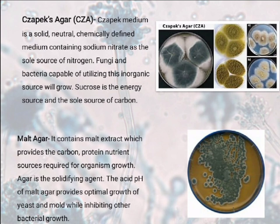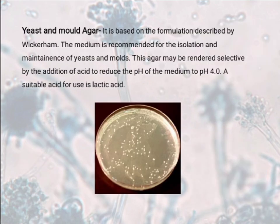The other medium is Malt Agar. It contains malt extract which provides the carbon, protein, and nutrient sources required for organism growth. Agar is a solidifying agent. The acid pH of malt agar provides optimal growth of yeast and mold while inhibiting other bacterial growth. The last agar we discuss today is Yeast and Mold Agar. It is based on the formulation described by Wickerham. The medium is recommended for the isolation and maintenance of yeast and molds. This agar may be rendered selective by the addition of acid to reduce the pH to 4. A suitable acid used is lactic acid.